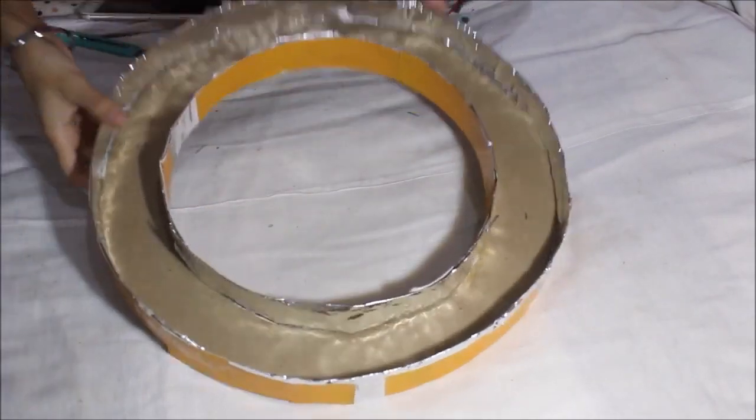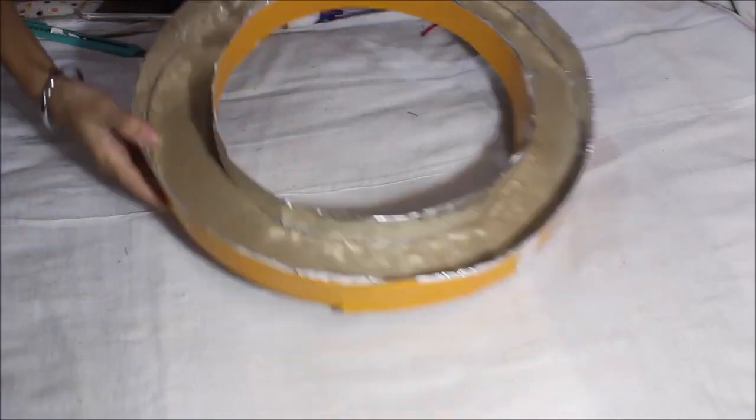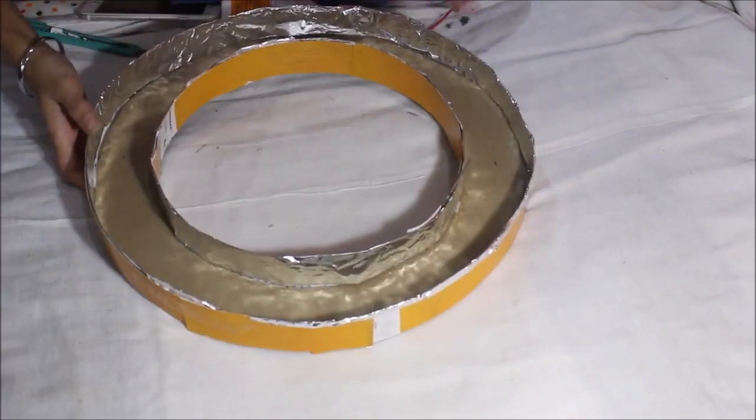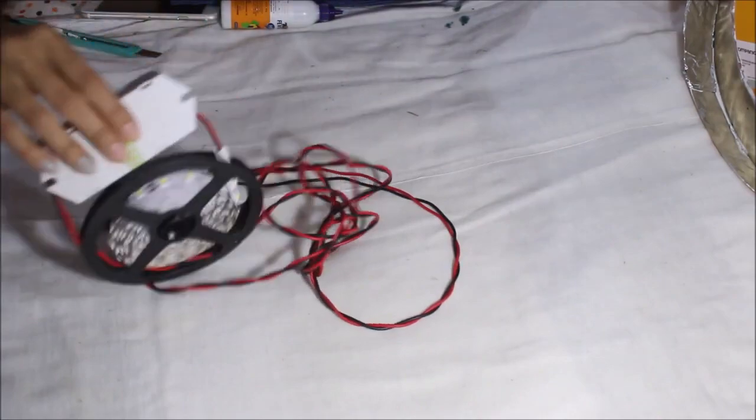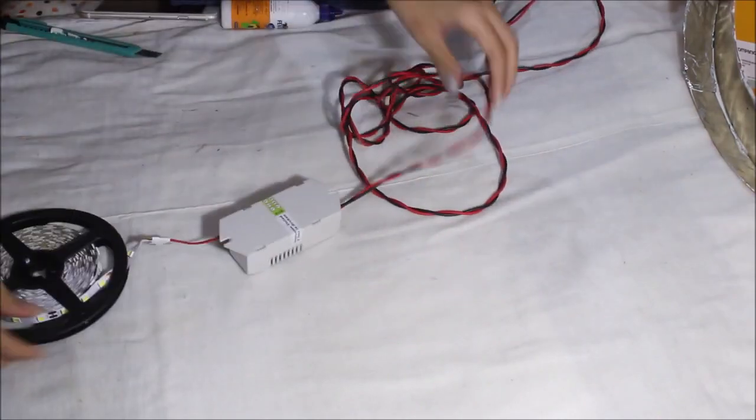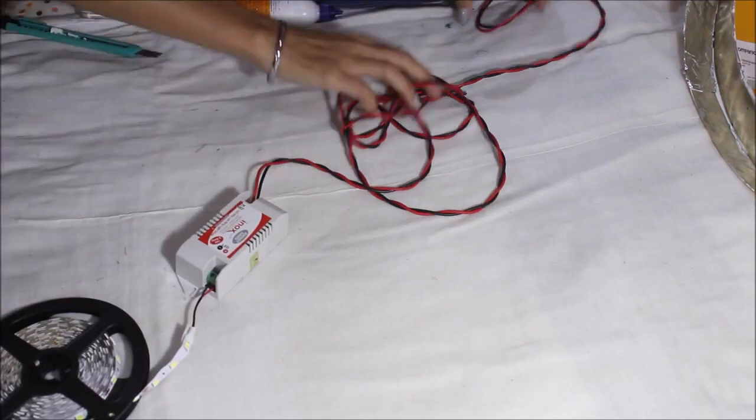Once you're done with filling the boundaries of the ring light with foil, you need to get the LED light and check if it's working or not. I got the wires attached by the electrician himself because I can't do that. So then check if the ring light is working or not.